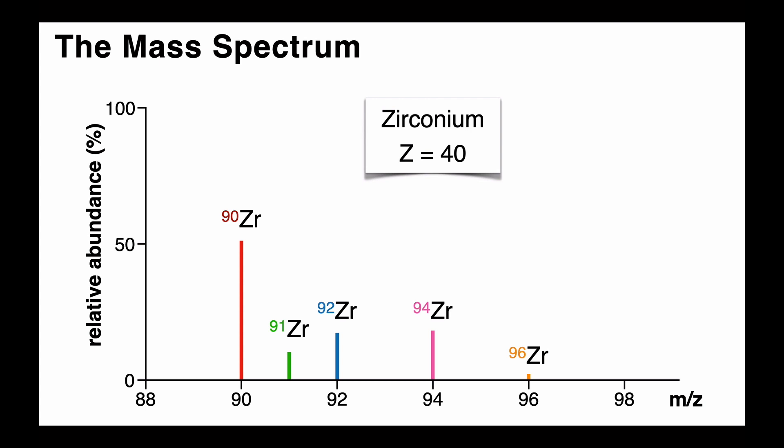Here's the example of the mass spectrum of zirconium. It has an atomic number of 40, so that means 40 protons in the nucleus. But it's the number of neutrons that vary from one isotope to another. And by looking at the peaks in a mass spectrum, we can identify which isotopes are present and what is their relative abundance.